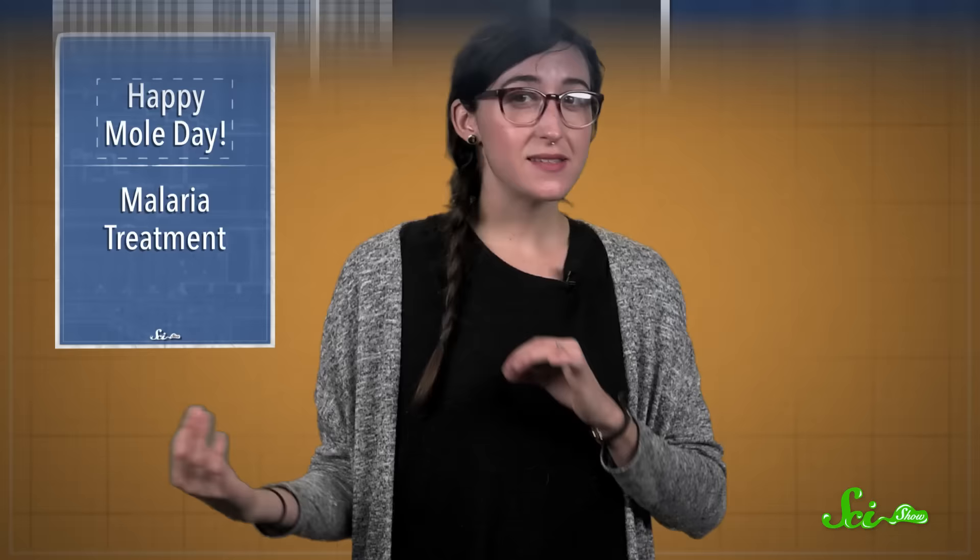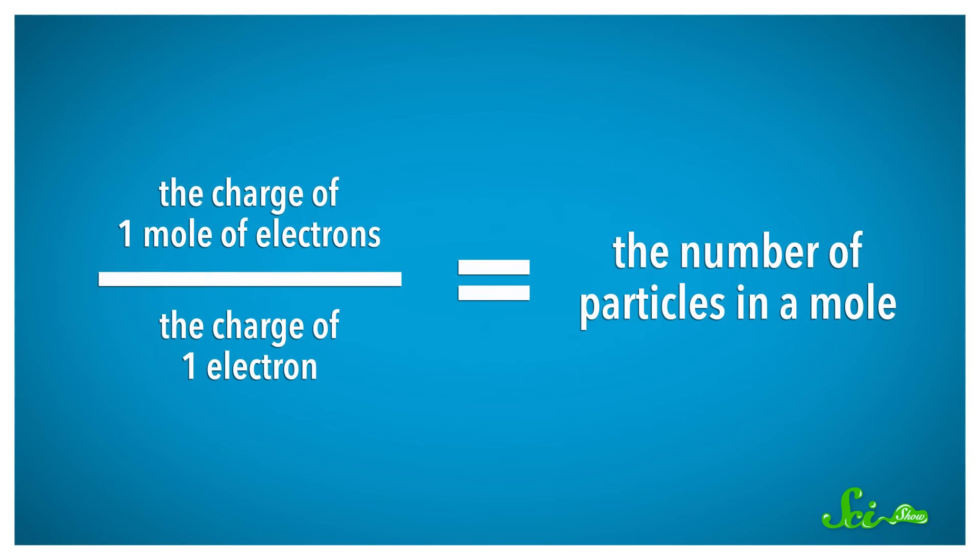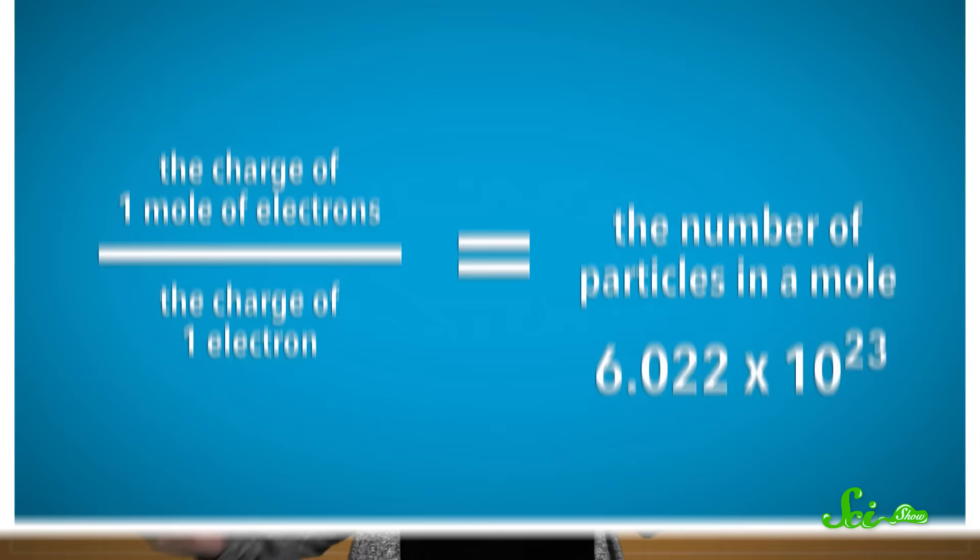The key piece in the puzzle was when the physicist Robert Millikan discovered the charge of an electron. Scientists already knew the charge of one mole of electrons, which is equal to a constant called one Faraday. And the charge of one mole of electrons divided by the charge of one electron gives you the number of particles in a mole: 6.022 times 10 to the 23rd. But it was another scientist, Jean-Baptiste Perrin, who first called the constant Avogadro's number in his honor.